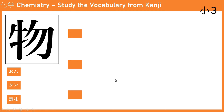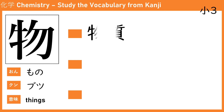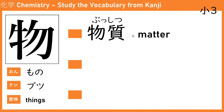The next kanji is 物 (butsu/mono). The onyomi is mono, meaning things. The first word is 物質 (bu-shitsu). 物 means things, and 質 (shitsu) means quality, so 物質 means matter.